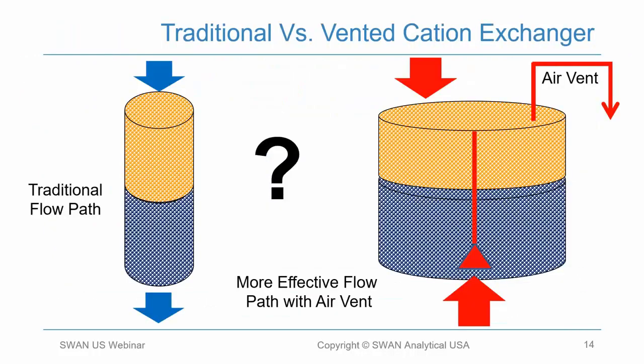Now let's talk about cation exchangers. On the left is a traditional resin column cation exchanger whereby the sample flows from the top to the bottom.